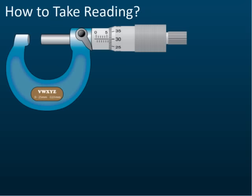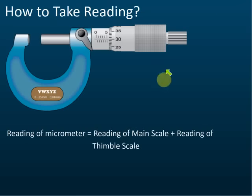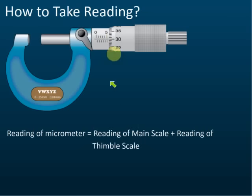How to take a reading from a micrometer: the reading is equal to the reading of the main scale plus the reading of the thimble scale. This is the main scale, and this is the thimble scale.